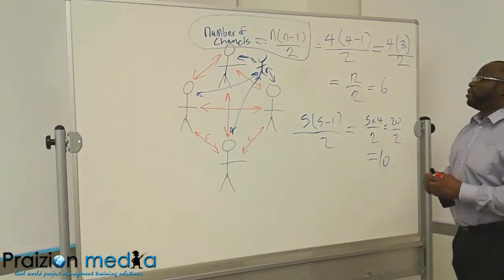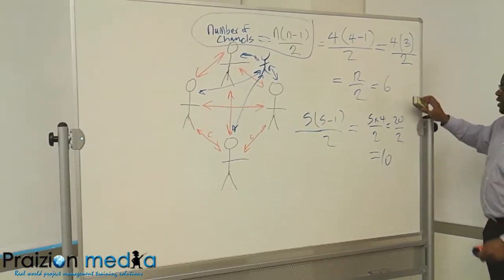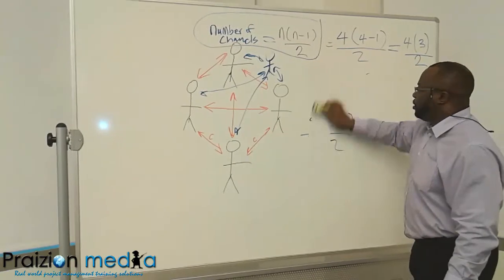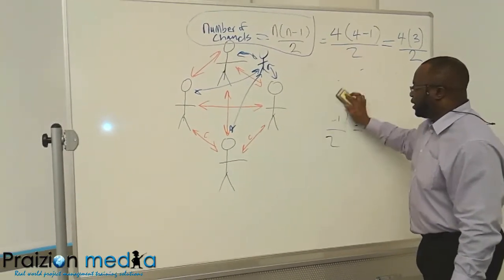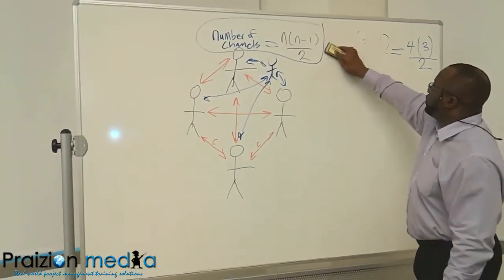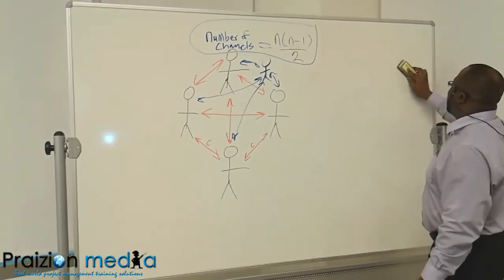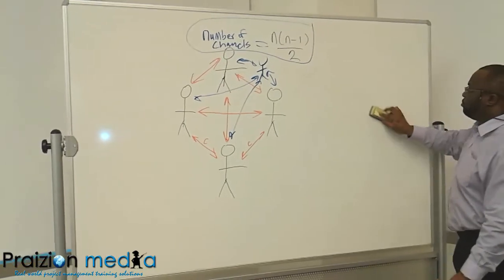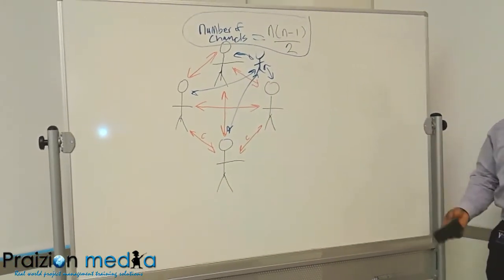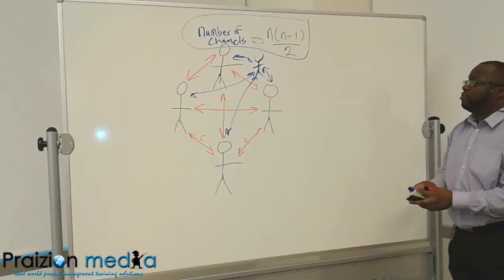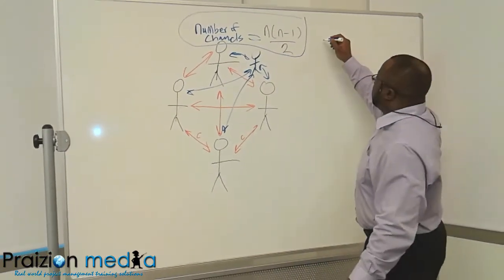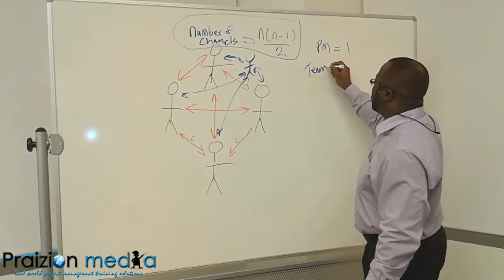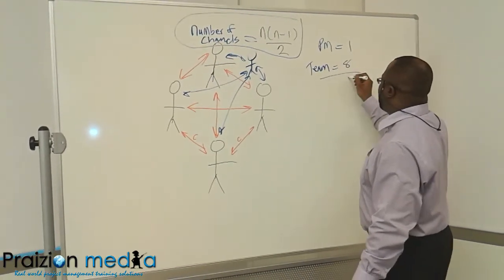Now, on the questions that you may encounter in many mock exams or even on a real exam, they may say you are a project manager on a project managing a team of 8. Watch out for the subtleties. The project manager is one person, the team is 8 people. Altogether, you've got 9.